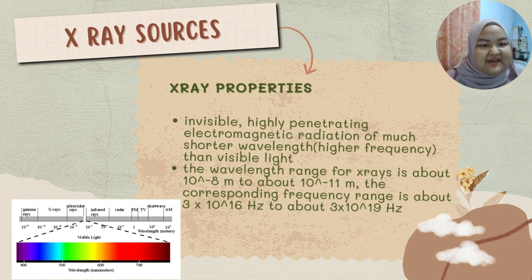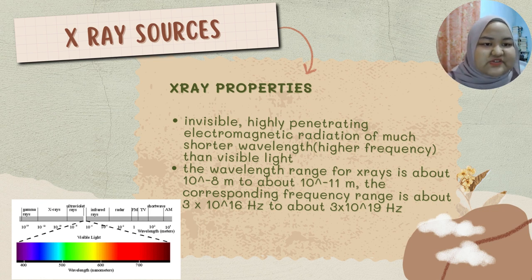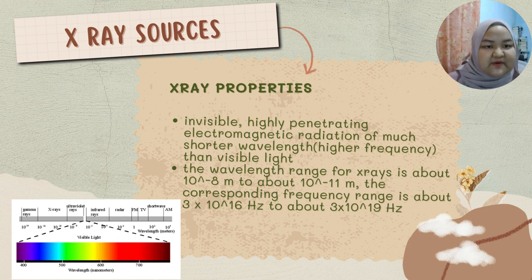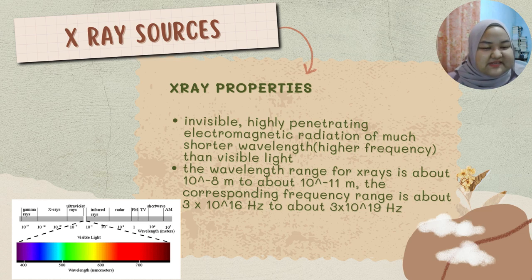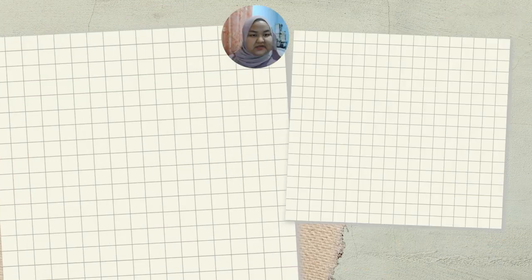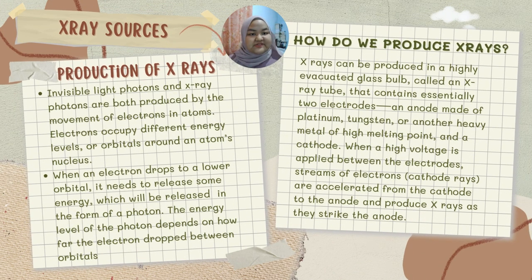Next is X-ray properties. X-rays are invisible, highly penetrating electromagnetic radiation of much shorter wavelength than visible light. The wavelength range for X-rays is about 10 to the power of negative 8 meters to about 10 to the power of negative 11 meters, and the corresponding frequency range is about 3×10¹⁶ Hz to about 3×10¹⁹ Hz.